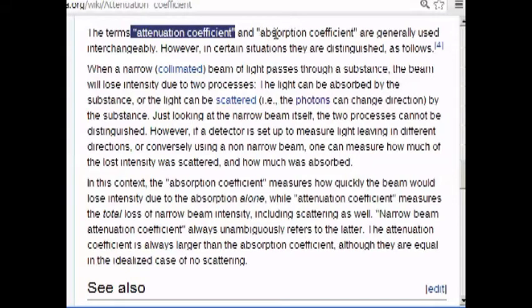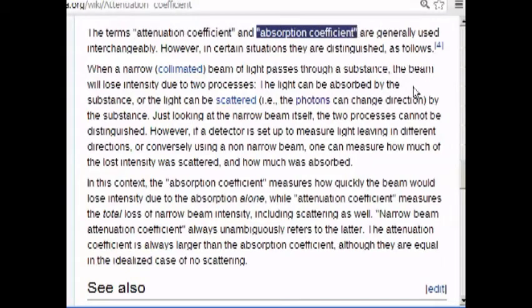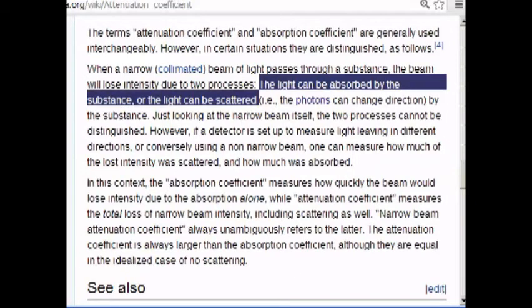The terms attenuation coefficient and absorption coefficient are generally used interchangeably, however, in certain situations they are distinguished. When a narrow collimated beam of light passes through a substance, the beam will lose intensity due to two processes. The light can be absorbed by the substance, or the light can be scattered, i.e., the photons can change directions by the substance. Just looking at the narrow beam itself, the two processes cannot be distinguished. However, if a detector is set up to measure the light leaving in different directions, or conversely using a non-narrow beam, one can measure how much of the lost intensity was scattered and how much was absorbed.